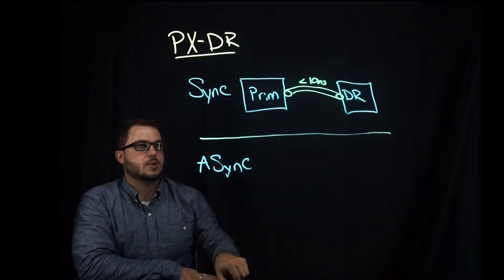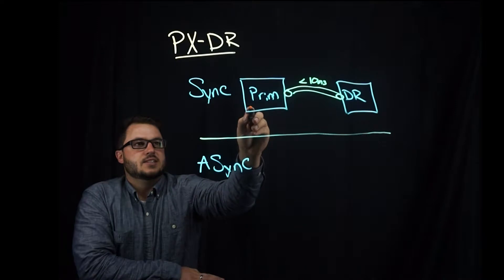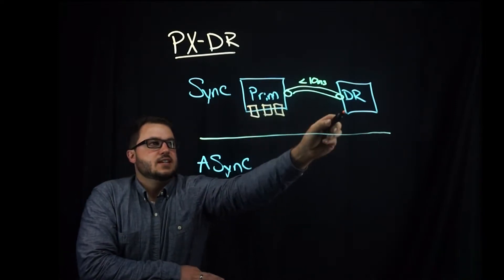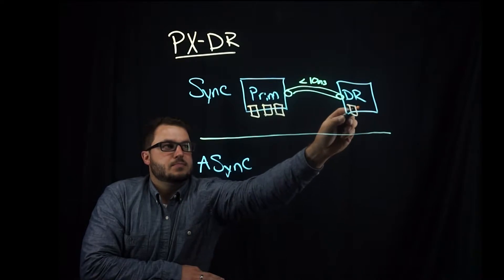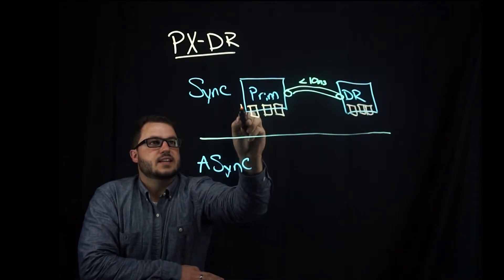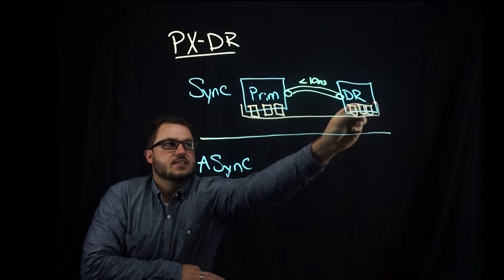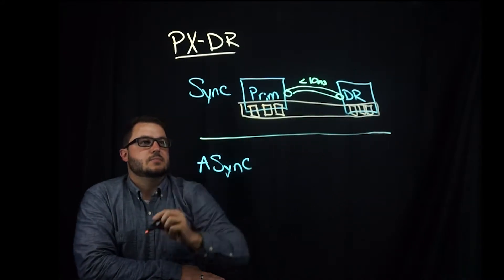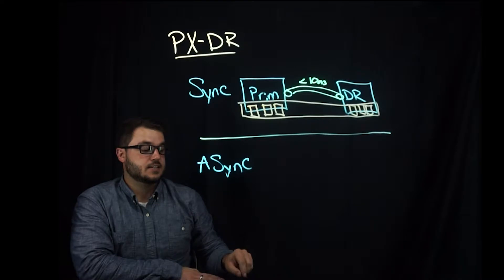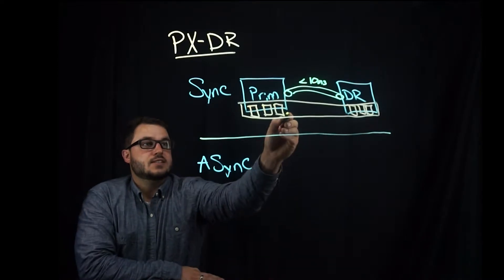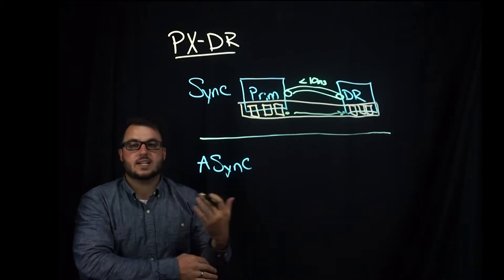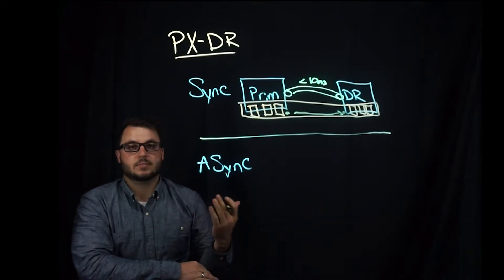This is because Portworx is deployed in your primary site and in your DR site. However, they act as a single cluster — meaning when you write data to disk in this cluster, it's also replicated to this cluster. So data is always available in both sites.